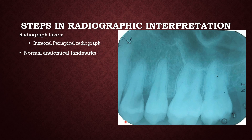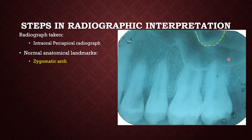Let's look at this radiograph. First of all, we need to analyze that it is an intraoral periapical radiograph and from the appearance, it looks like it is the second quadrant. The normal anatomical landmarks seen here: the yellow line is your zygomatic arch, the purple line is the floor of the maxillary sinus. We also see another shadow in the posterior part of this maxillary radiograph which doesn't really belong to the maxilla — it is the coronoid process of the mandible, visible on most posterior parts of most maxillary molar radiographs.